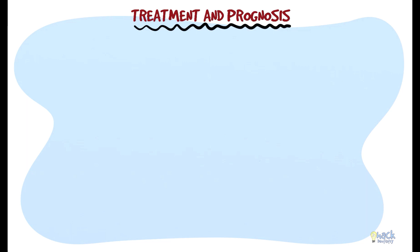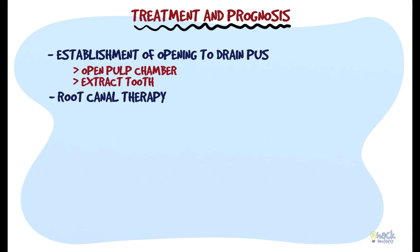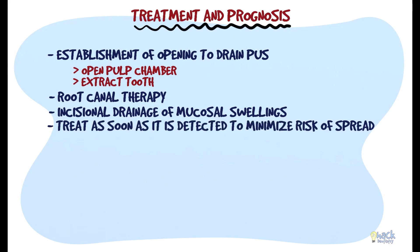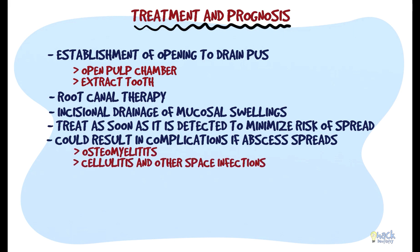Treatment mandates establishment of an opening either by opening the pulp chamber or by extracting the tooth. A better approach would be to retain the tooth via root canal therapy. Incisional drainage can be done for mucosal swellings. Care must be taken to treat the lesion as soon as it is detected in order to minimize the risk of spread, which could otherwise cause complications like osteomyelitis or cellulitis.